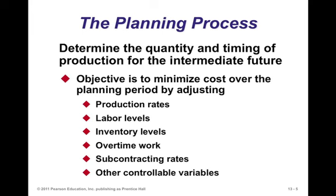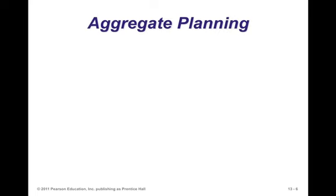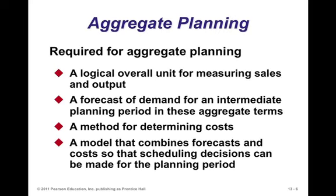If we look at these elements, those are productive capabilities. Your production rates influence your productive capacity. Your labor levels — if you have more staff, you have more capacity. Inventory is a form of capacity. You could use overtime as a form of capacity. You could subcontract work to a contract manufacturer — that is also part of capacity. But all of these things have a cost associated with them. To generate a plan, we need a logical overall unit of measuring sales and output — that aggregated unit. For laptops, we won't distinguish between 13-inch and 15-inch and 17-inch at this point.